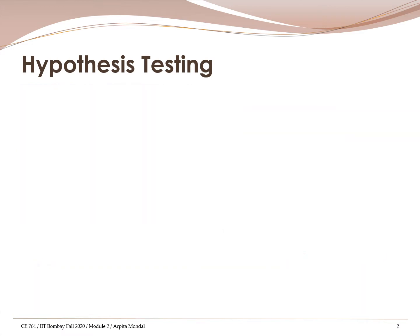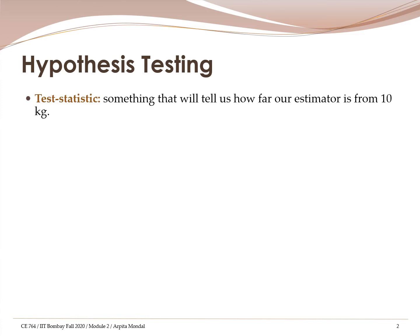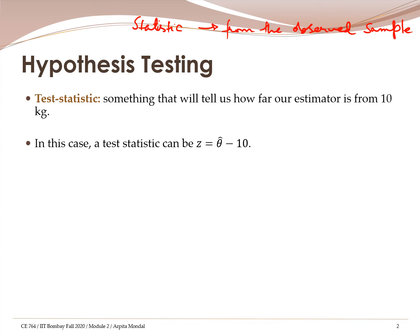For hypothesis testing we need to define what is called a test statistic. A test statistic tells us how far our estimator is from 10 kgs — the value we are testing against. The word 'statistic' refers to something which can be estimated from the observed sample. Intuitively, if we simply take the difference between our estimate theta-hat and 10 kgs, that would tell us how far away it is. So one can choose a test statistic z which is theta-hat minus 10.